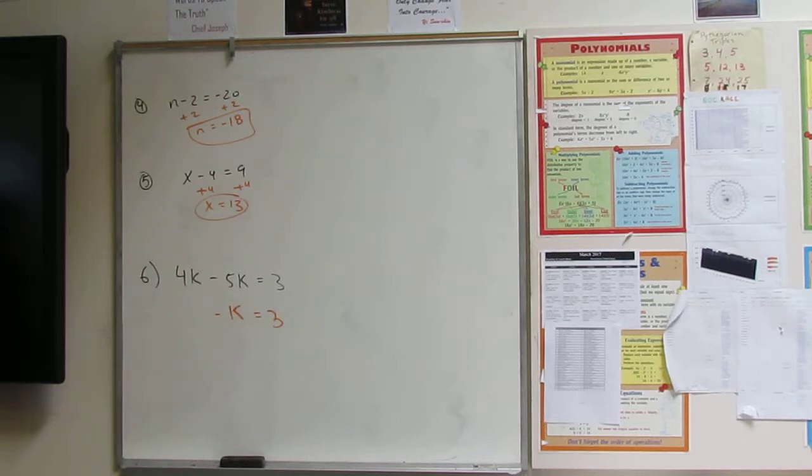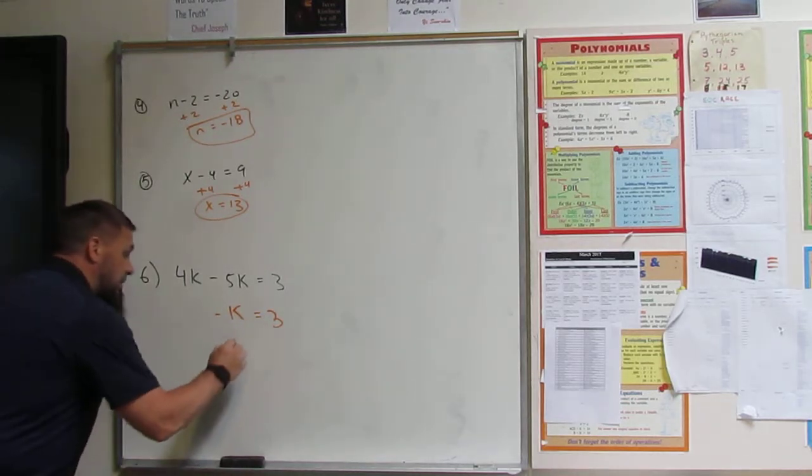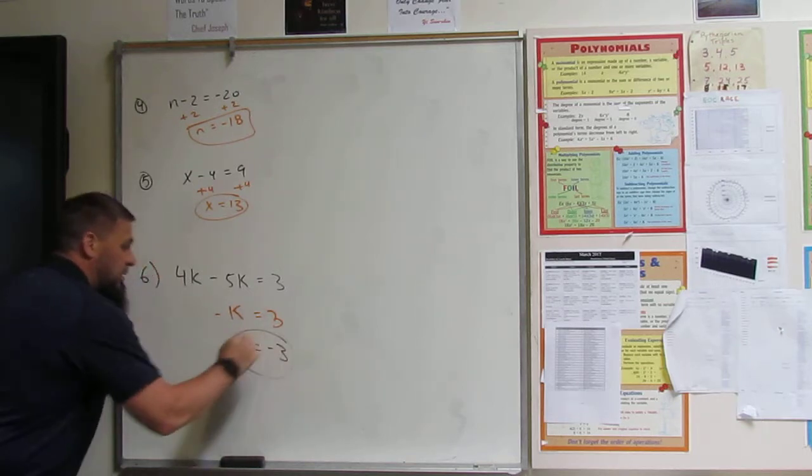So yeah, just four minus five, minus one. This is key, right? Now, change the signs. k equals negative three. That was easy.